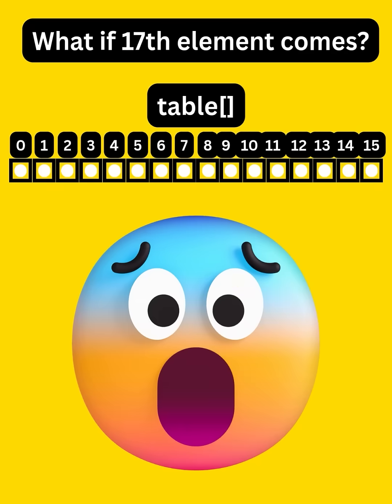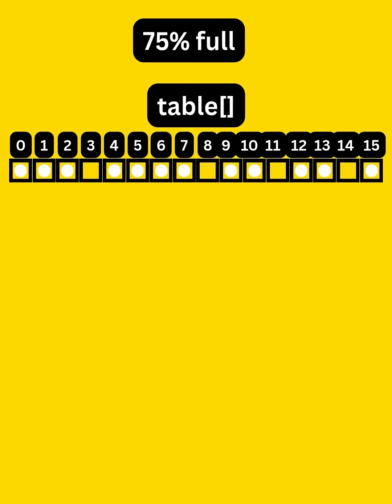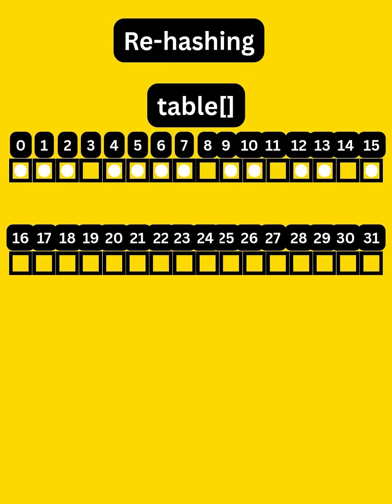But what if all 16 buckets get filled and a new element comes? To avoid this scenario, the moment the array fills by 75%, it will automatically double the size of the array and rearrange the elements. This is known as rehashing.